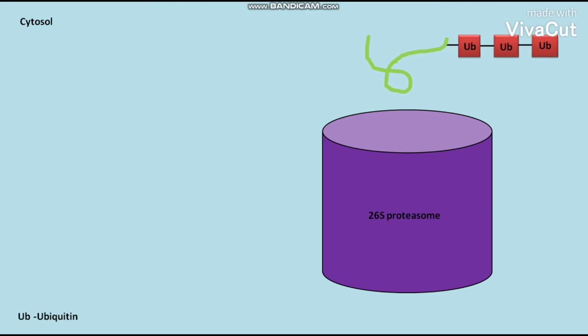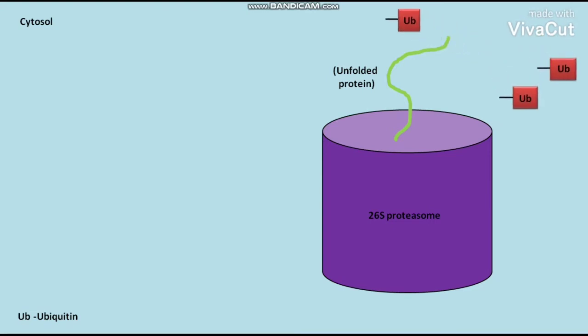The folded target protein then undergoes unfolding to produce an unfolded protein. The ubiquitins are then released from the unfolded protein to the cytosol.